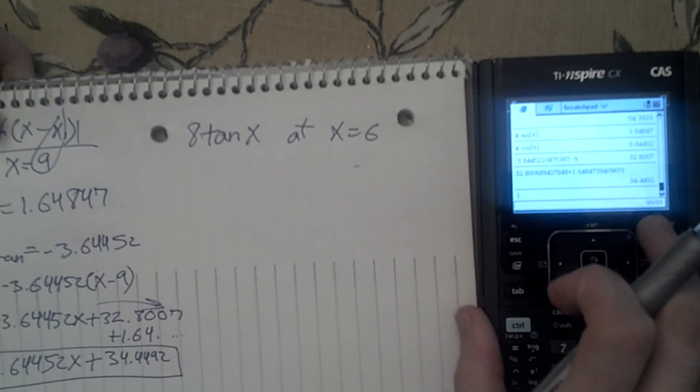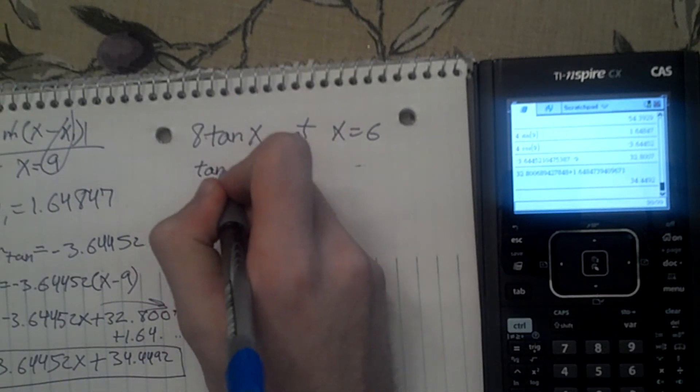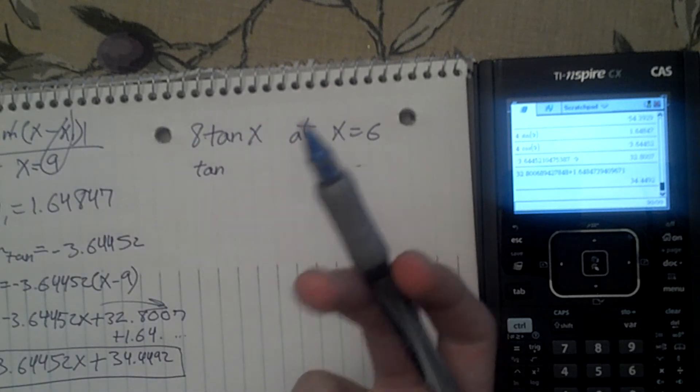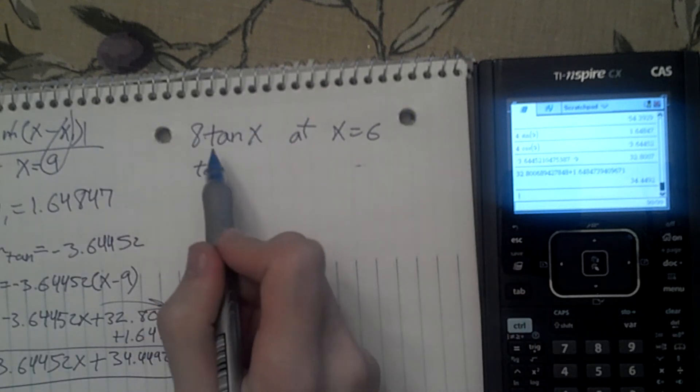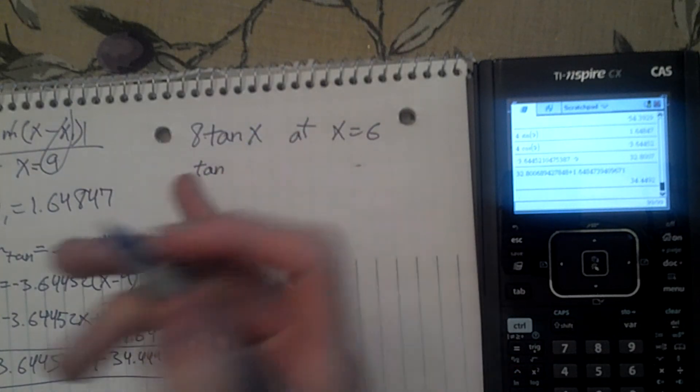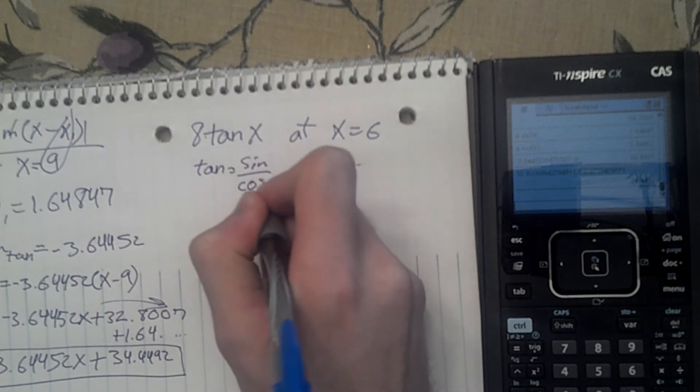Now we have this one. For tangent, we still do the same thing, y minus y1 equals m times x minus x1. Now, we have to find the derivative of this, which is the derivative of tangent equals sine over cosine.